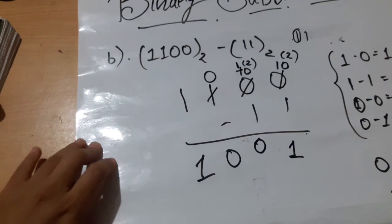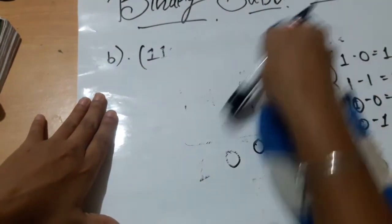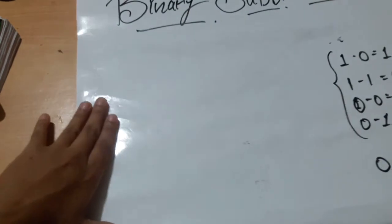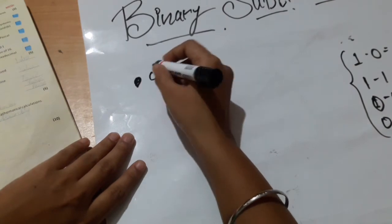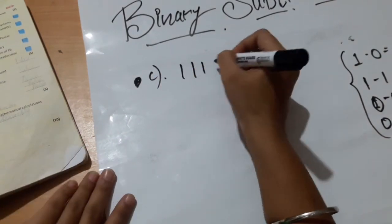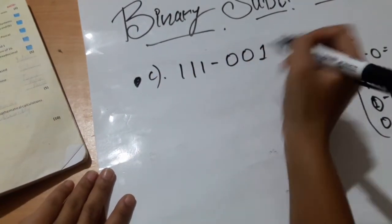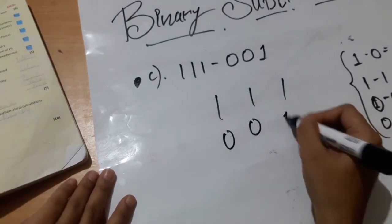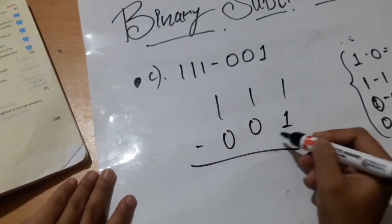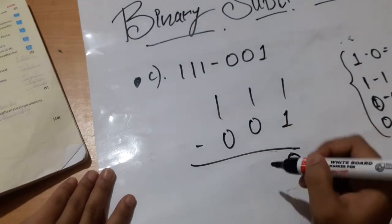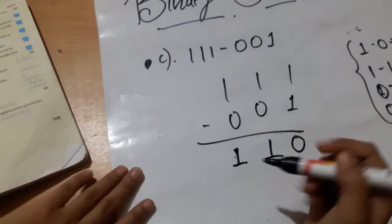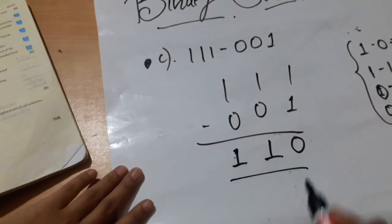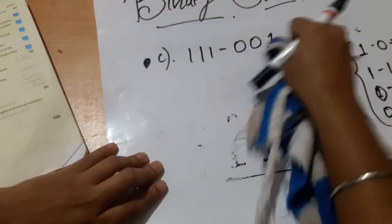Now we will try a different question: 111 minus 001. We will arrange this. Since it is a straightforward subtraction — 1 minus 1 is 0, 1 minus 0 is 1, and 1 minus 0 is 1. So our answer for this subtraction is 110.